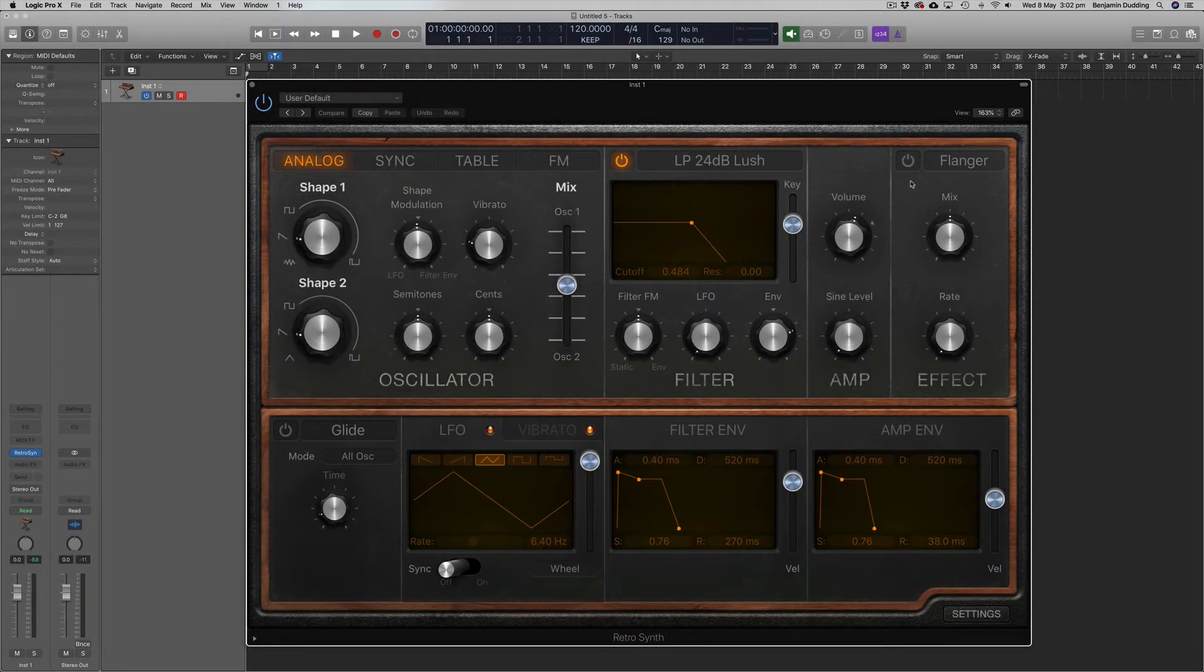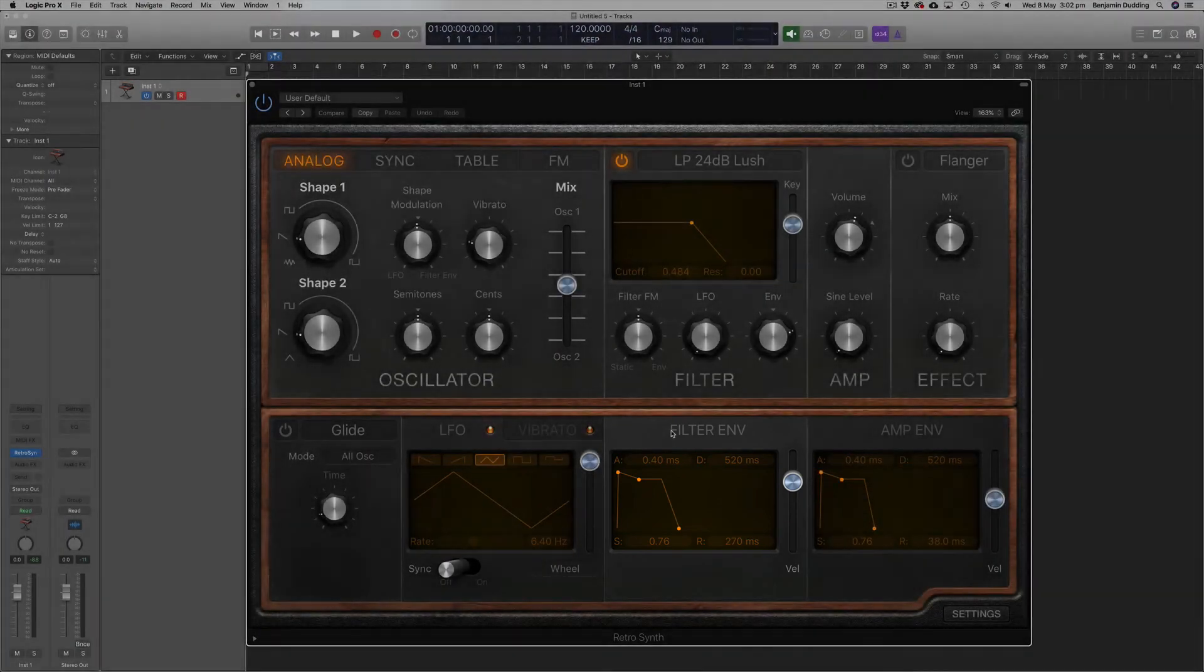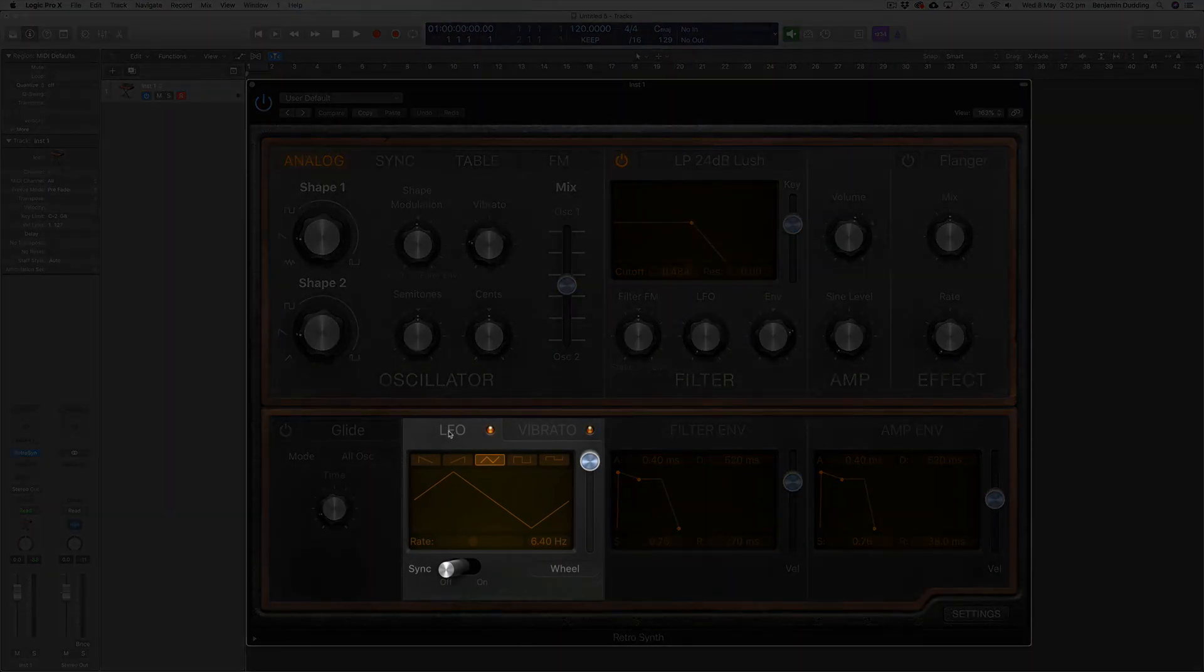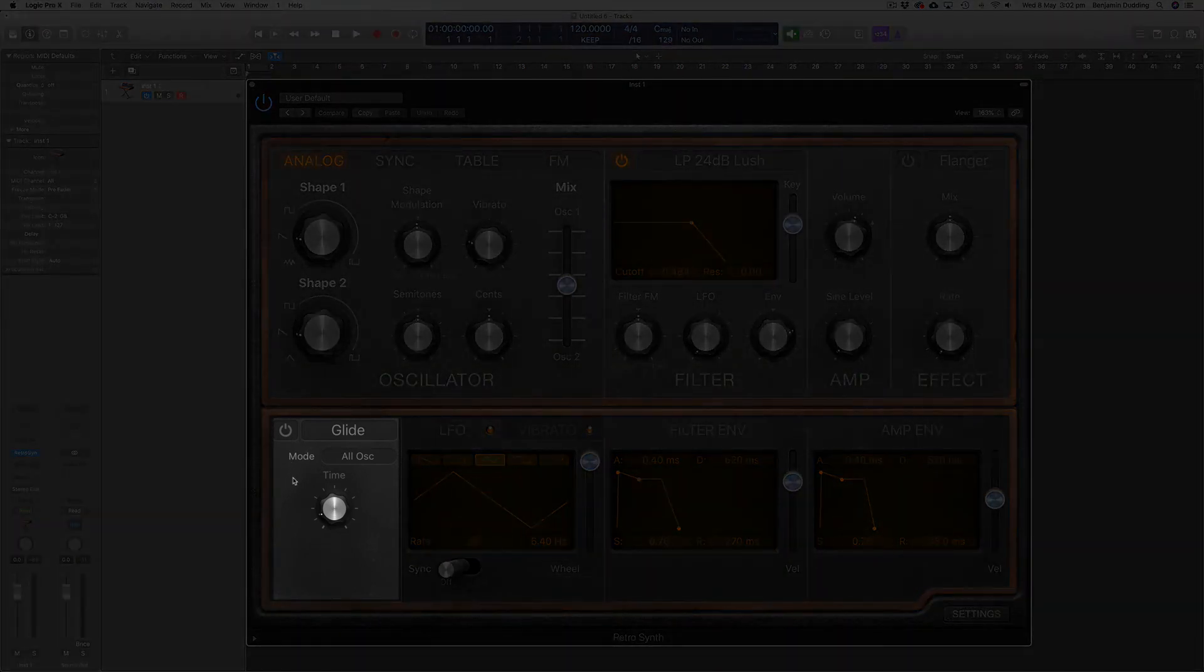Now the modulators are found down the bottom of the interface. We've got two envelopes down the bottom right here - an amplifier envelope and a filter envelope. And there's also an LFO. There's some global controls such as glide also down the bottom left.